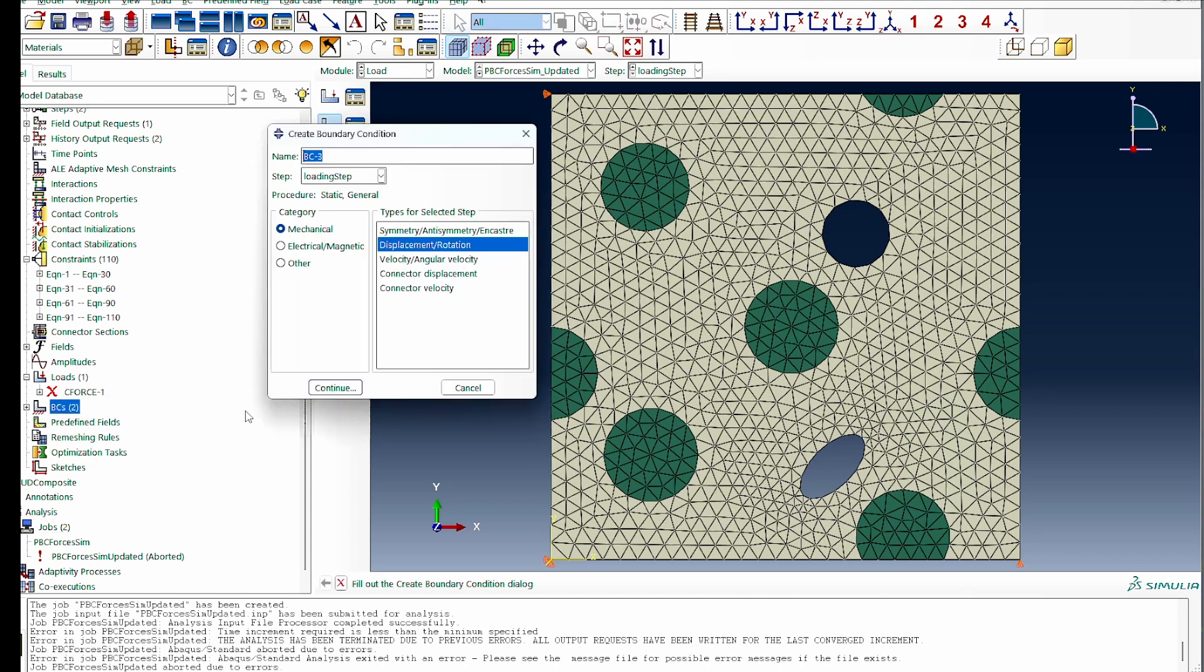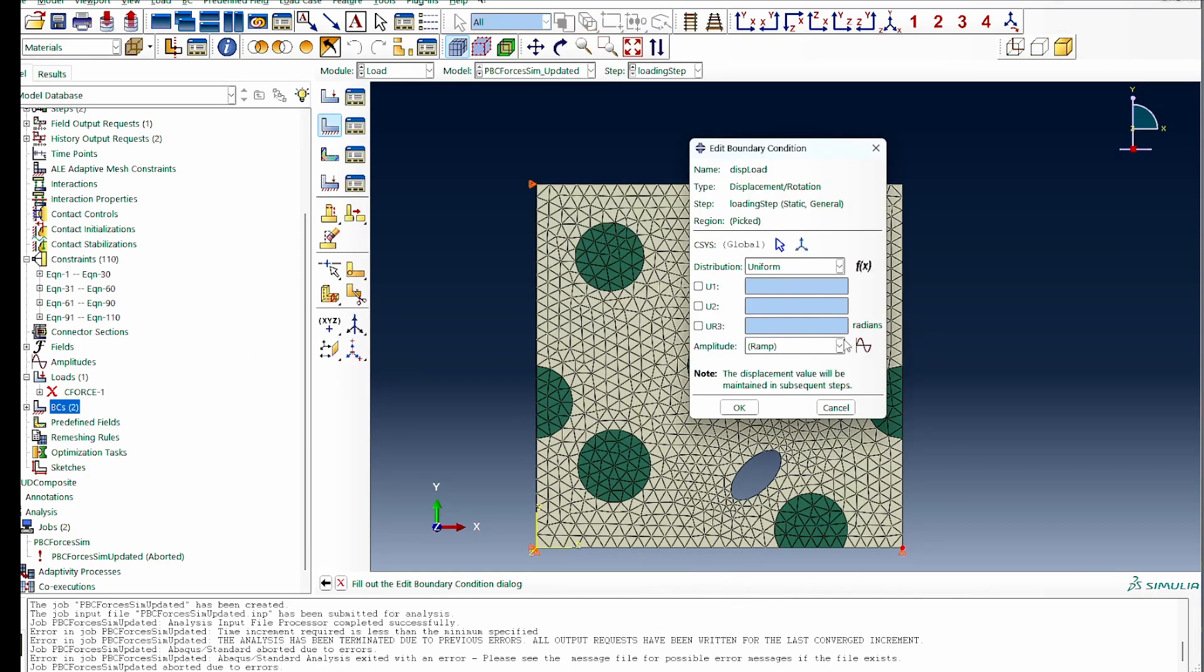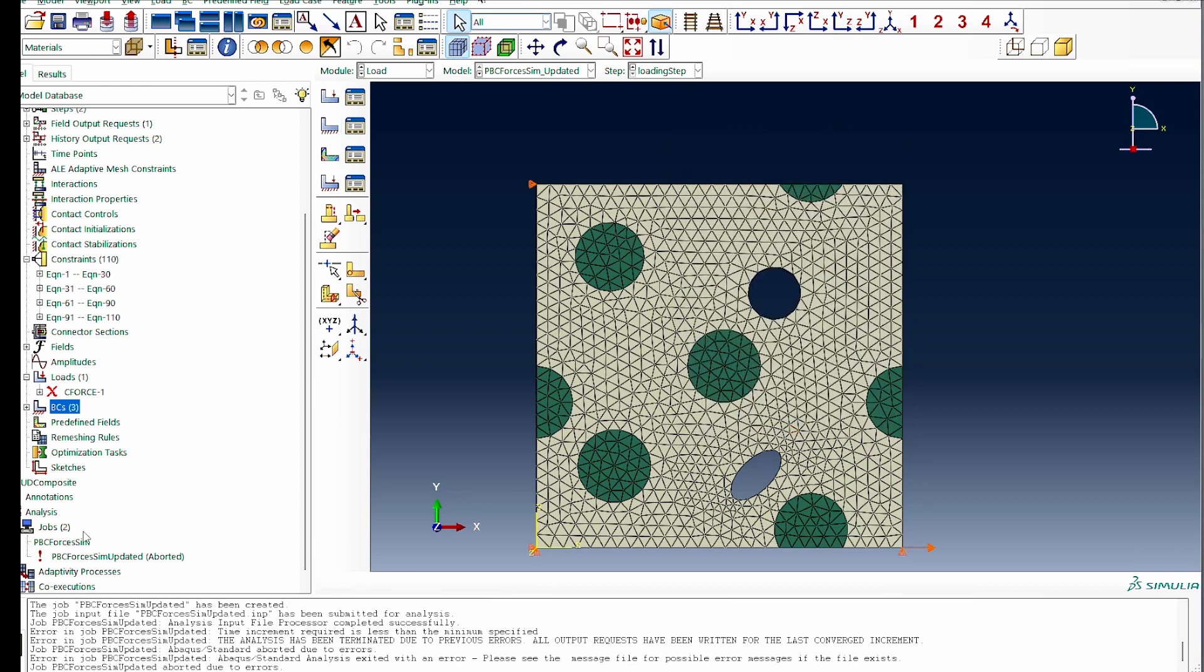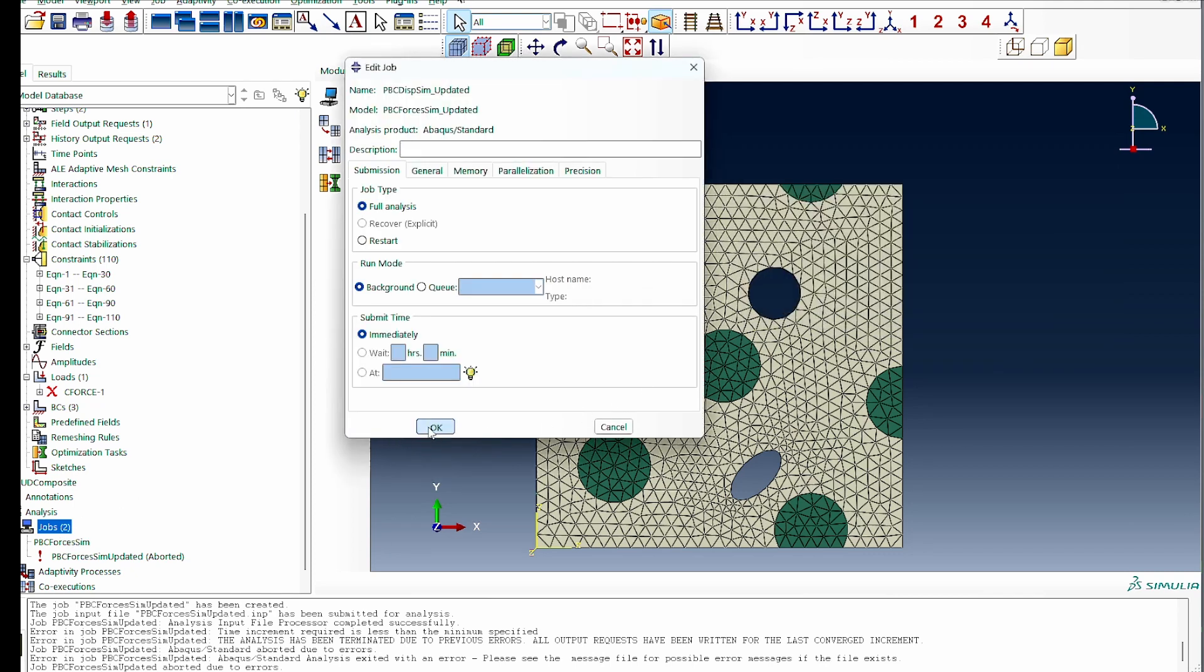I will always recommend that you work with displacement because it's a Dirichlet-style boundary condition - it's very stable and consistent. If you look at the simulation we've got here, it actually couldn't complete the simulation. If we monitor what happened, you'll find out later on during the simulation, around 90% of it, it aborted and became unstable. But if I just go back to the same model, suppress this force that we applied, and create a displacement.